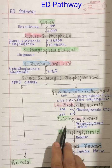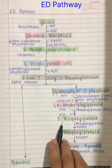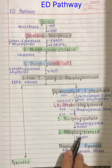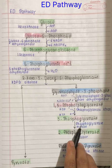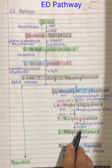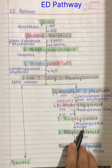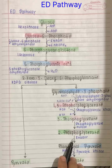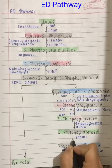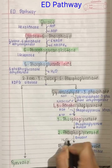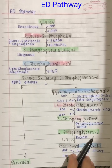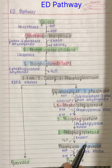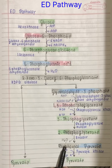The next step is isomerization, where 3-phosphoglycerate is converted into 2-phosphoglycerate through an internal rearrangement. The enzyme involved is phosphoglycerate mutase, which relocates the phosphate group from the 3rd carbon to the 2nd carbon. After that, dehydration occurs where 2-phosphoglycerate is converted into phosphoenolpyruvate. The enzyme catalyzing this reaction is enolase, which works by removing a water molecule.